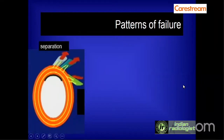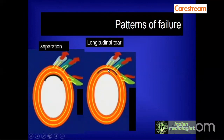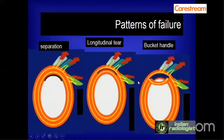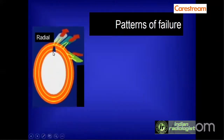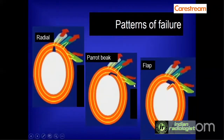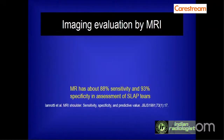When the glenoid labrum fails to cope with the applied force, it can either separate from the bony attachment, be subjected to a longitudinal tear within the substance of the glenoid, or this tear can separate and form a bucket handle type of SLAP lesion. The tear can be radial or a classic SLAP lesion. These are the main morphological types of tears in the superior labrum due to excessive forces acting on the biceps labral complex.